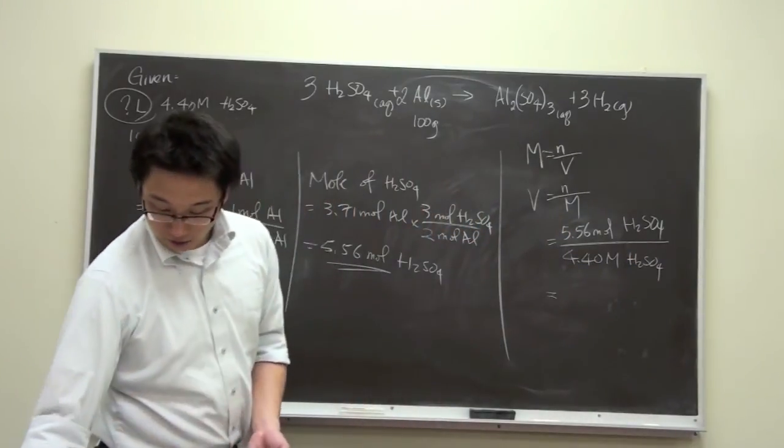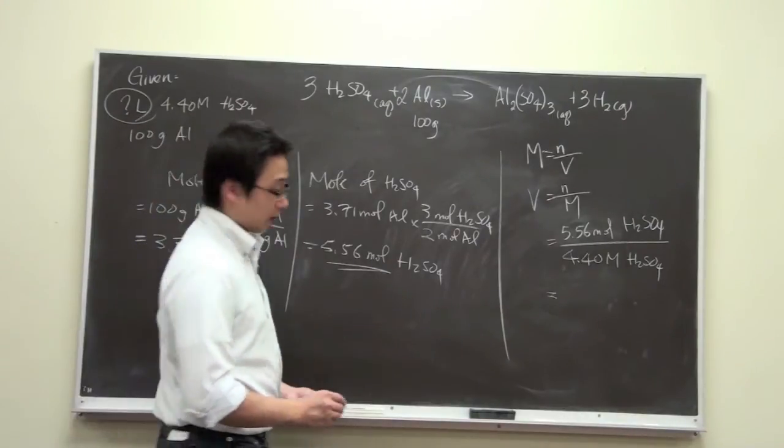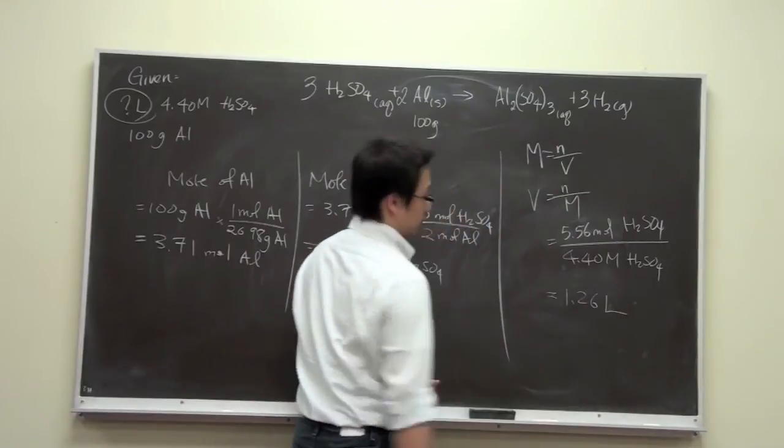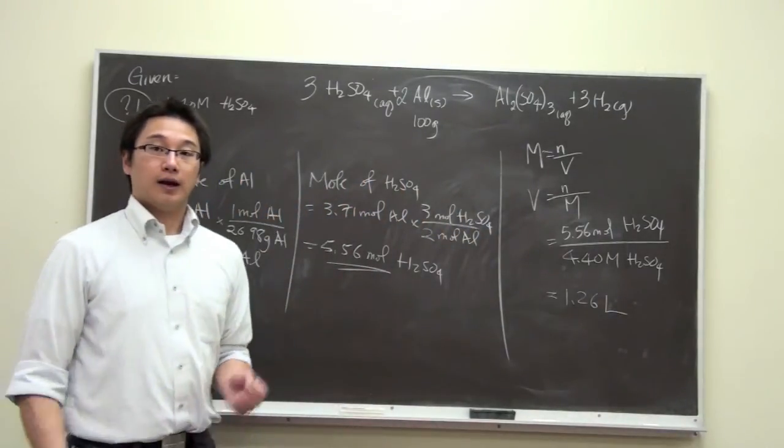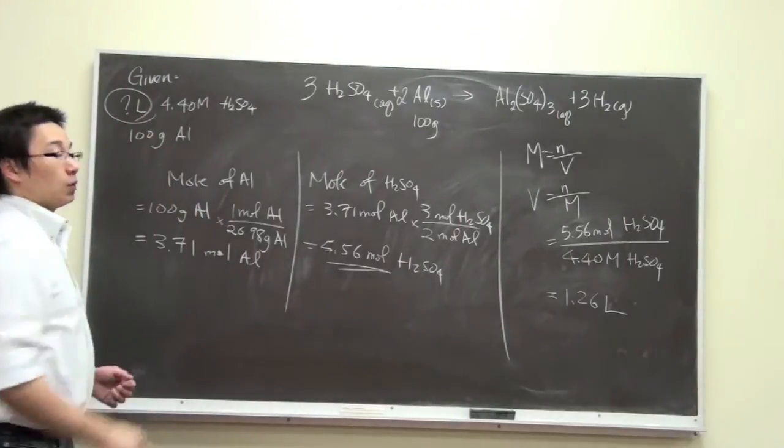So if you use a calculator, you should get 1.26 liters of the solution. And this is the amount we need to completely react with the aluminum.